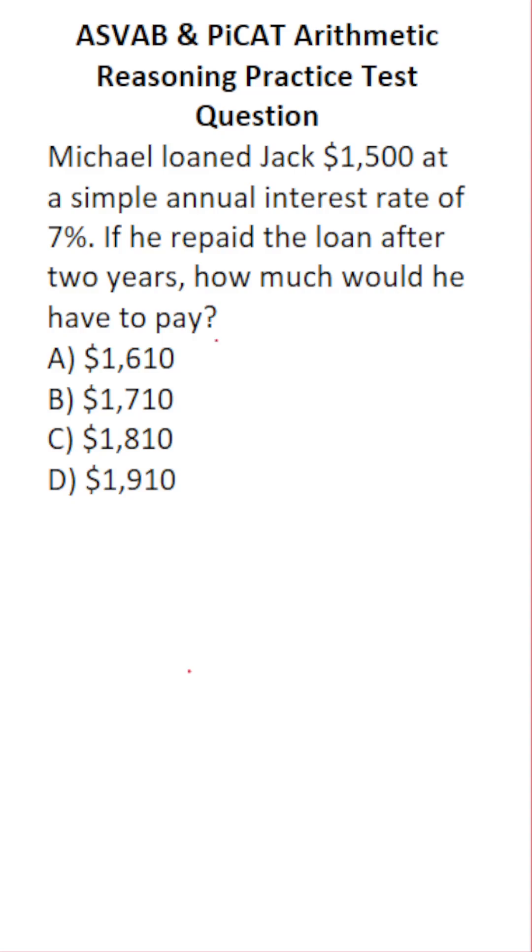Simple interest is given by the formula: interest I equals principal times rate times time. By multiplying these three things together, we'll be able to figure out how much Michael accrued in interest.